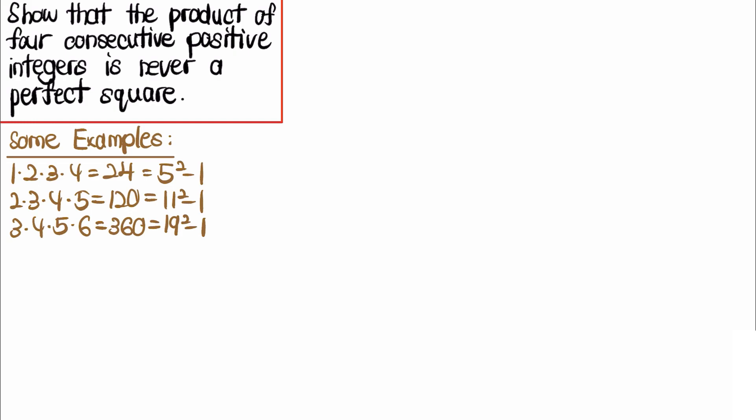Let's take a look at a nice number theory problem where we want to show that the product of four consecutive positive integers is never a perfect square. Before we start to solve this problem, we can actually look at some examples.